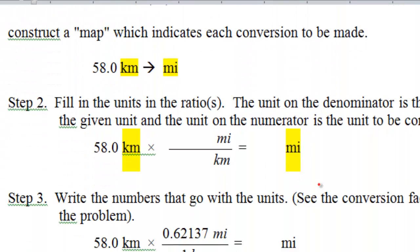Step 1 is identifying the problem by drawing a map: the unit you want to convert from goes on the left of the arrow, and the unit you want to convert to goes on the right. Step 2 is setting up the calculation so that the unit you want to convert from cancels out and the unit you want to convert to is left over. You start with what you are given — 58 kilometers — multiplied by the conversion factor with the desired unit in the numerator and the original unit in the denominator, so kilometers cancel out and you are left with miles.